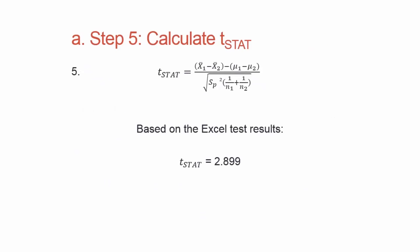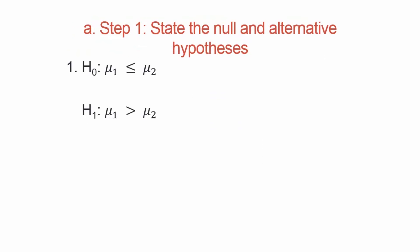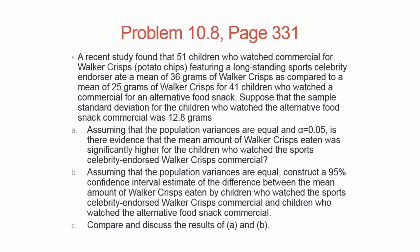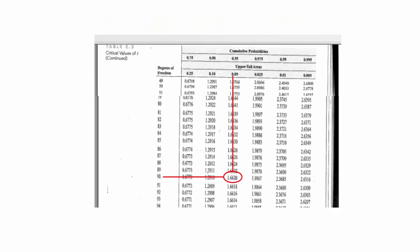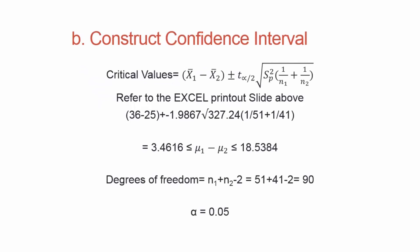Now part B: still assuming the variances are equal, construct a 95% confidence interval estimate for the difference between the mean amounts of crisps eaten. Instead of asking whether one mean is greater than the other, the question is really: how much greater is group one's mean than group two's? We use the confidence interval formula: x-bar 1 minus x-bar 2, plus or minus t-alpha-divided-by-2 times the square root of s-squared-p times 1 over n1 plus 1 over n2.